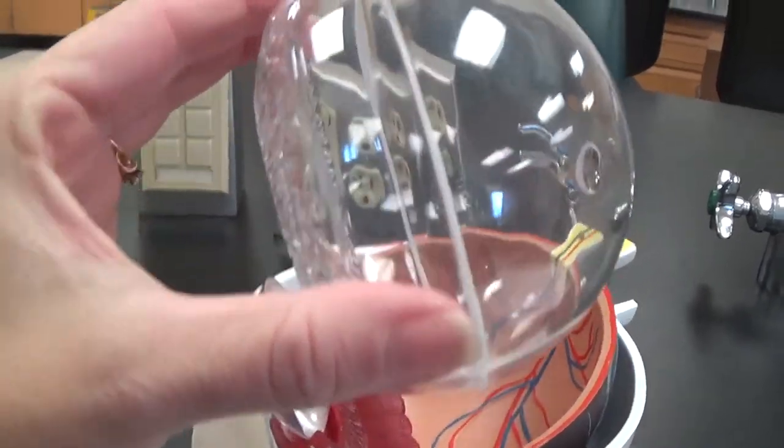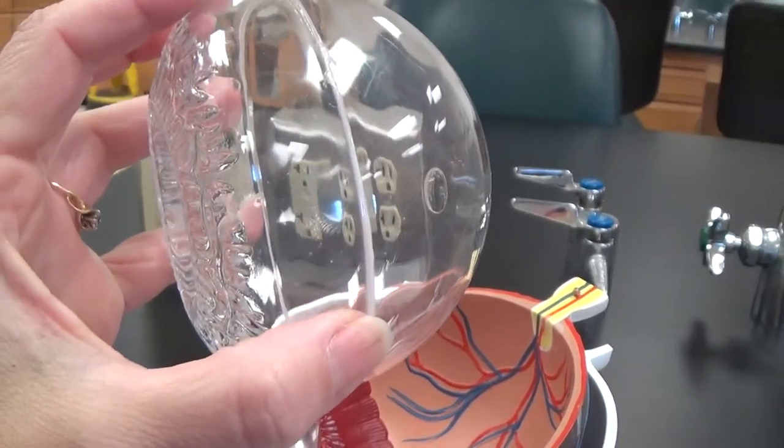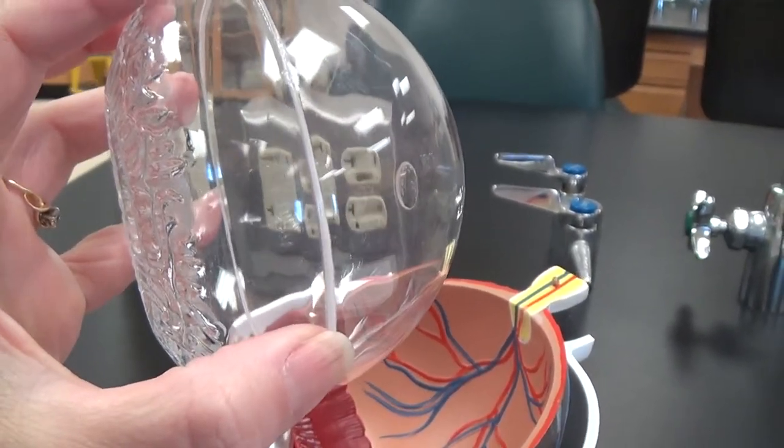This plastic ball represents the posterior cavity of the eye, which has the vitreous humor in it.